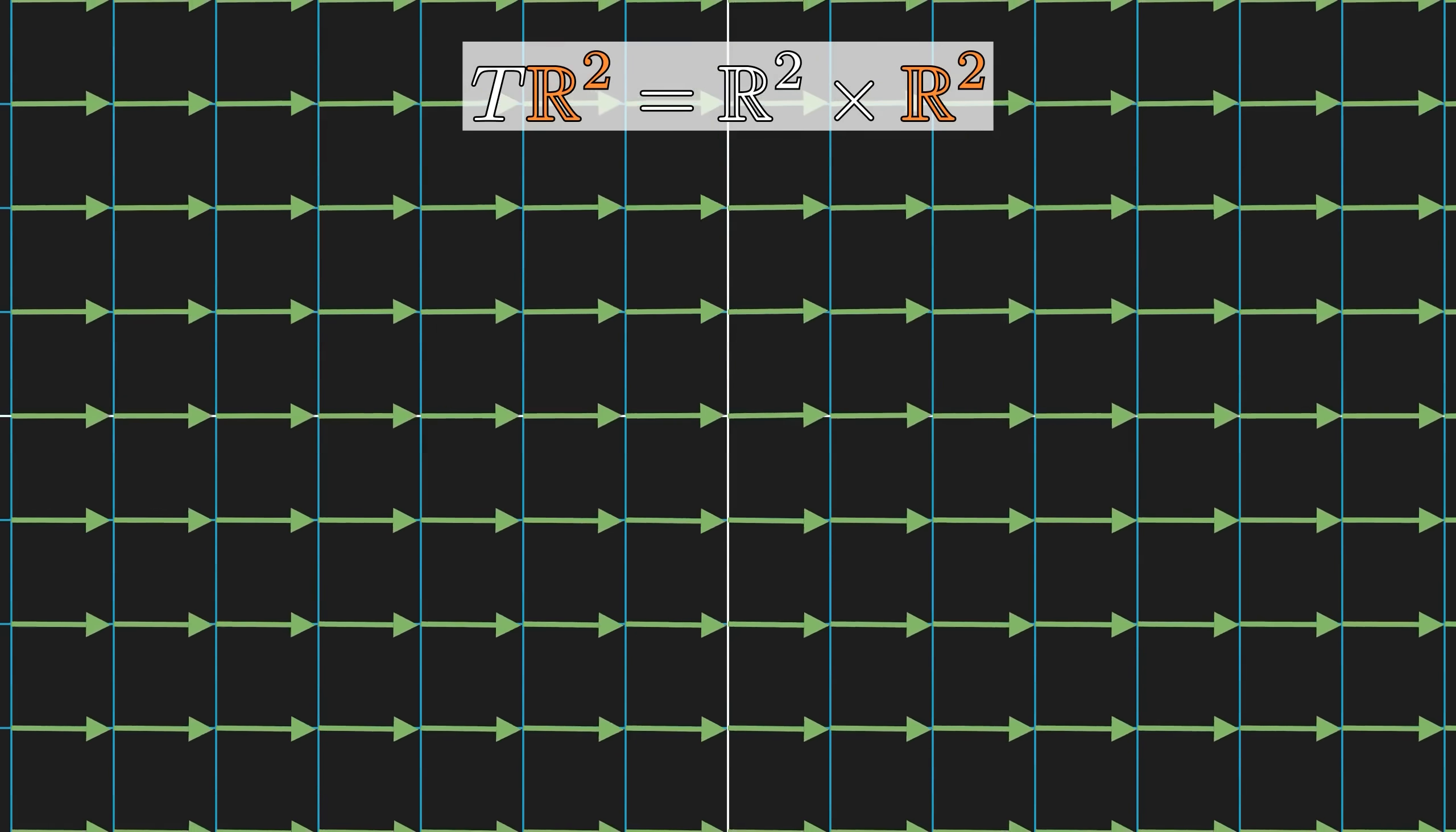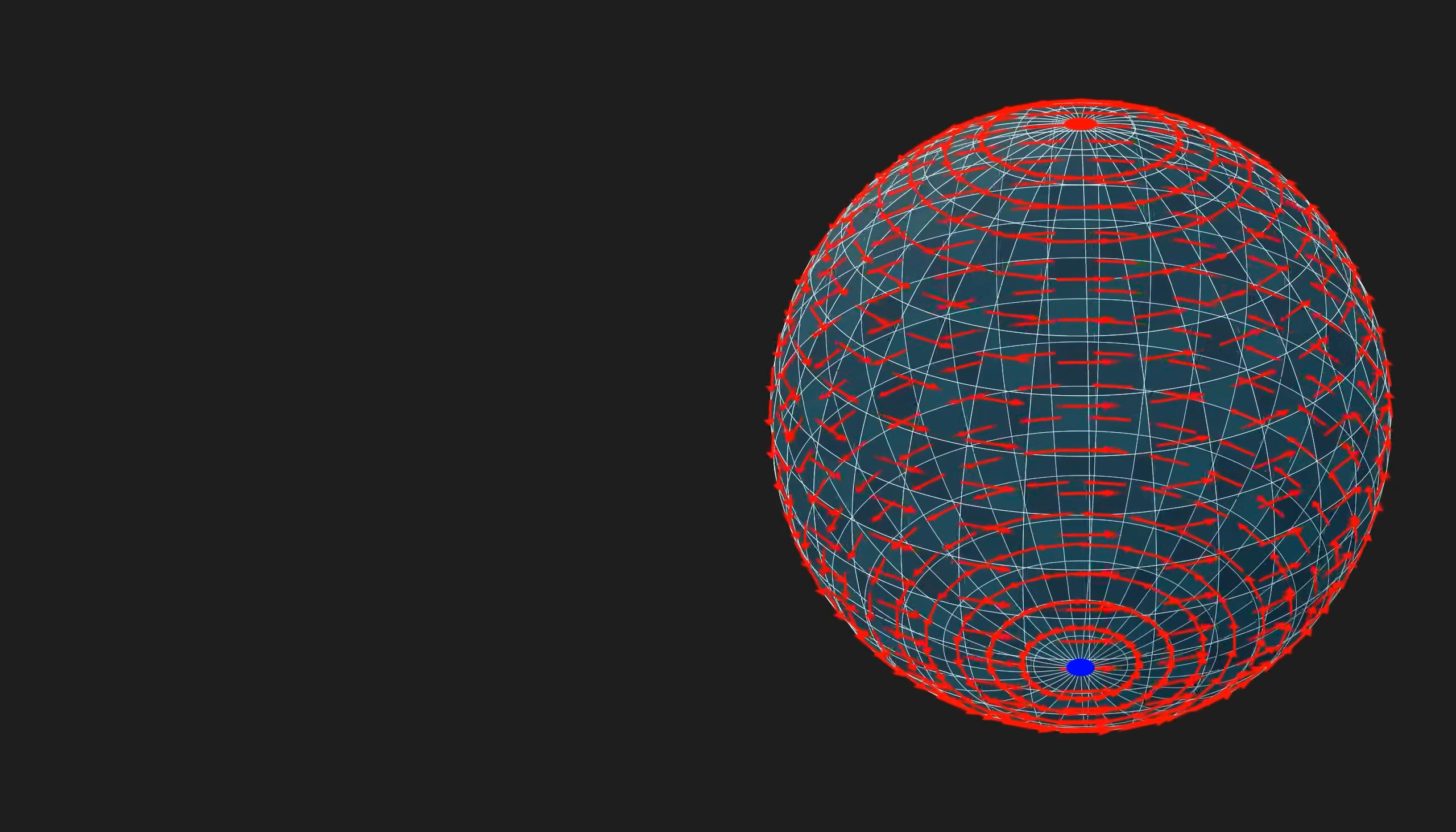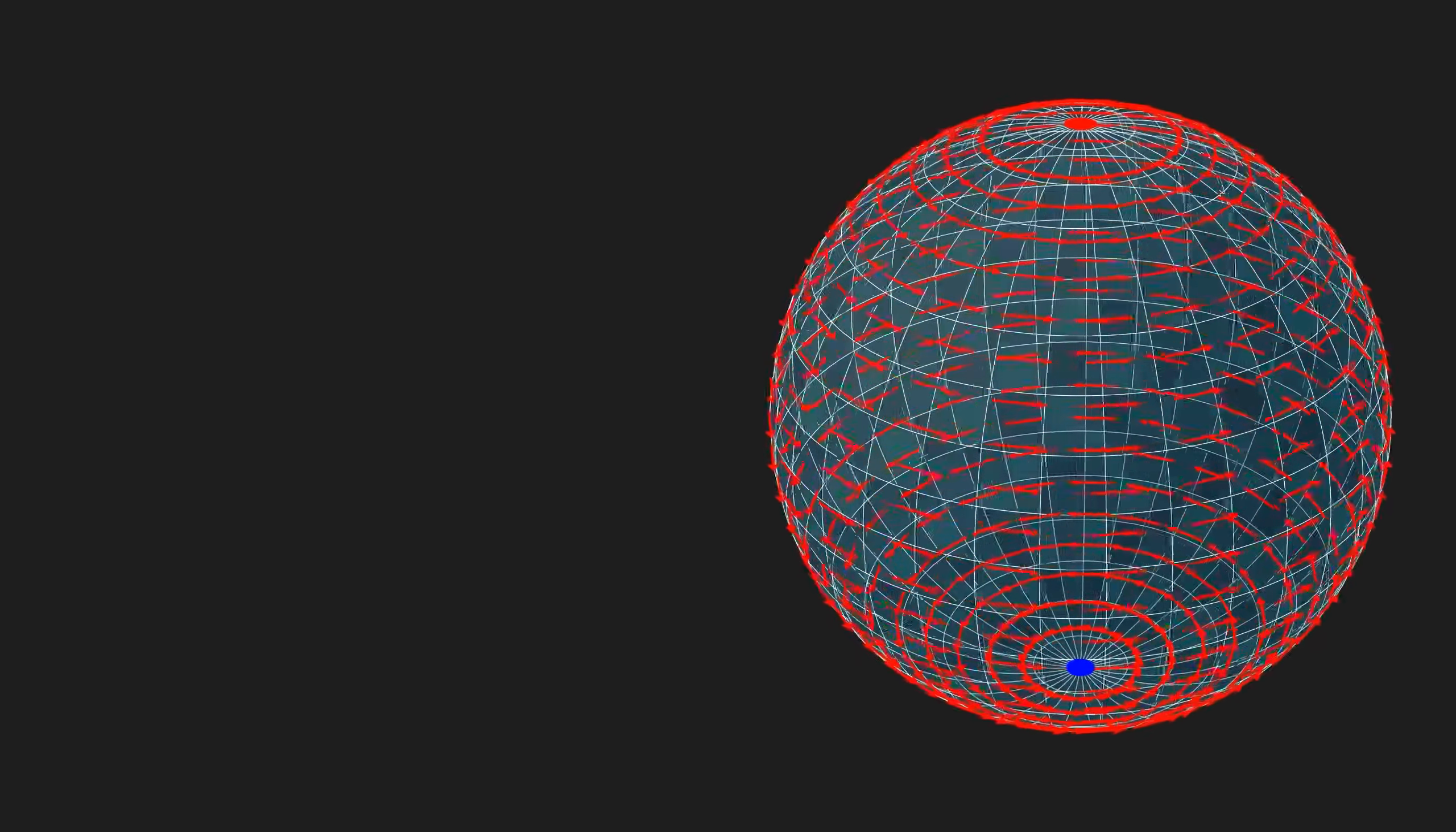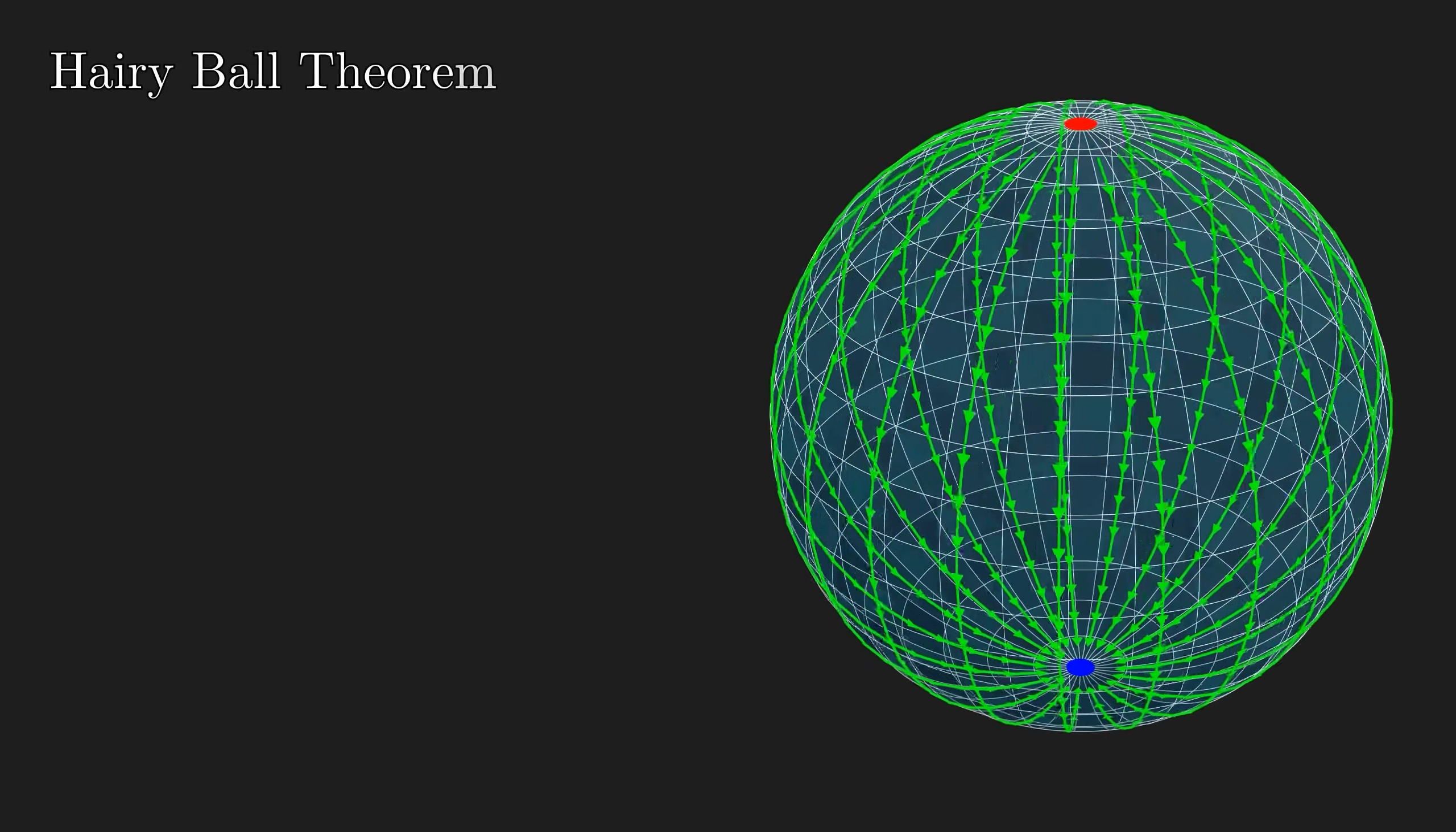For a two-dimensional vector bundle, if we can find two independent, smooth, non-vanishing vector fields, then the tangent bundle is trivial. Now, let's contrast that with the tangent bundle on a sphere. Every smooth vector field on a sphere must vanish somewhere, and this result is known as the Hairy Ball theorem.